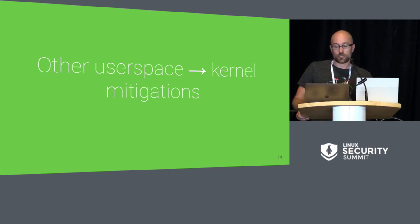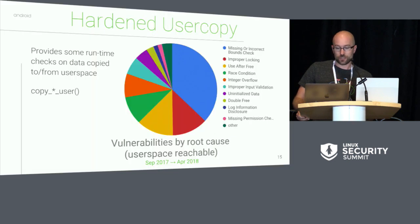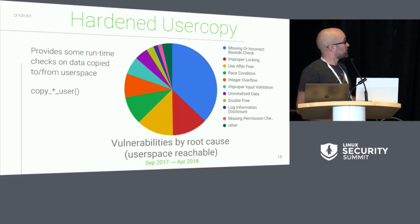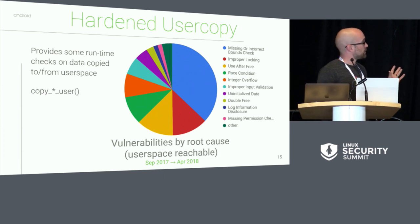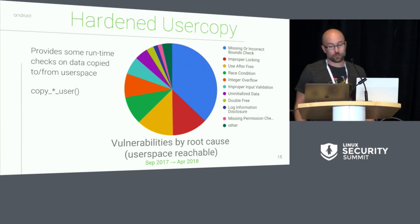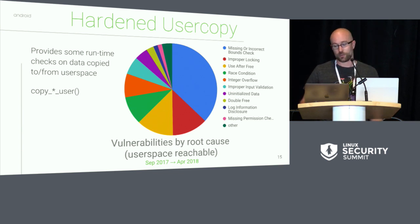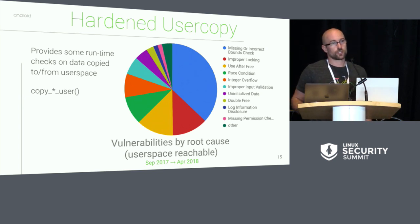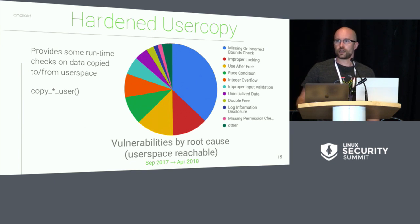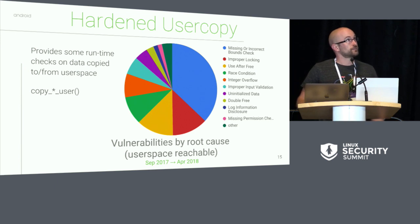There are also a couple of other really nice user space to kernel mitigations that have been introduced recently. This graph shows the root cause of user space reachable bugs on Android. The biggest problem is that people either don't check bounds or they check them incorrectly, allowing you to read out of bounds or write out of bounds. That's why we're excited about hardened usercopy, which was introduced in the upstream kernel in the last year or so and then backported to all of the Android kernels.